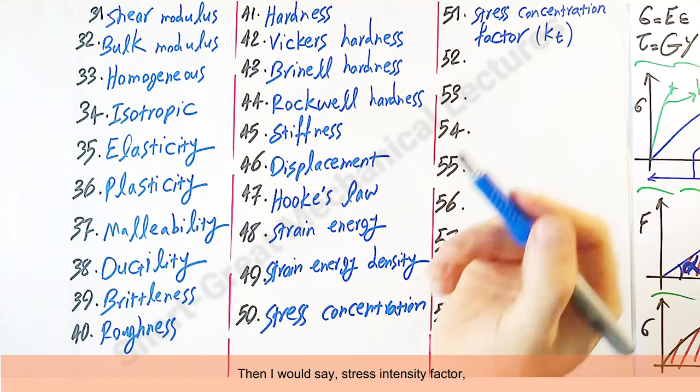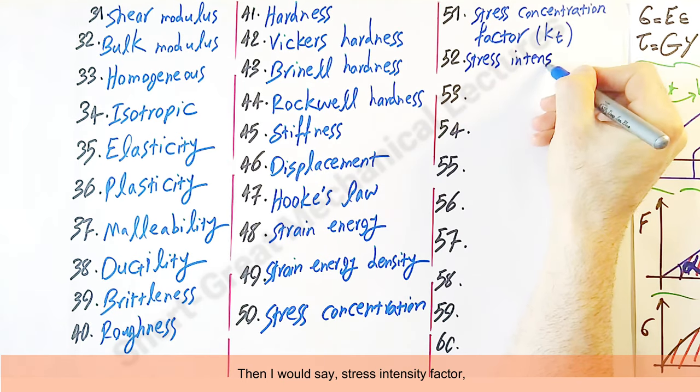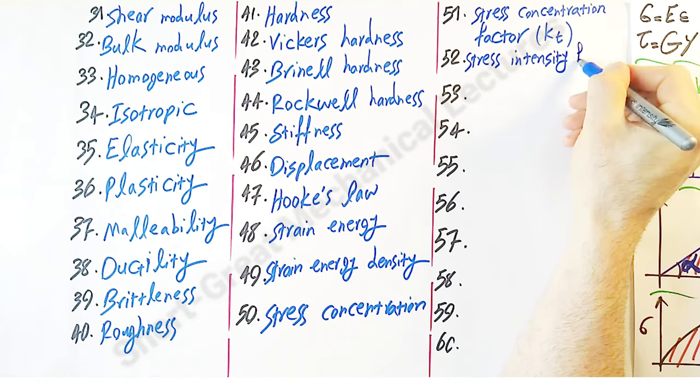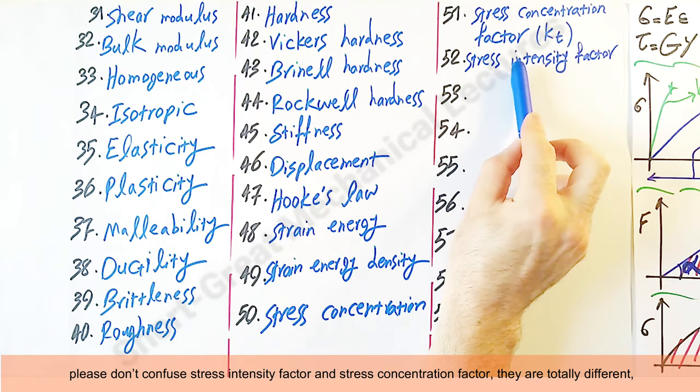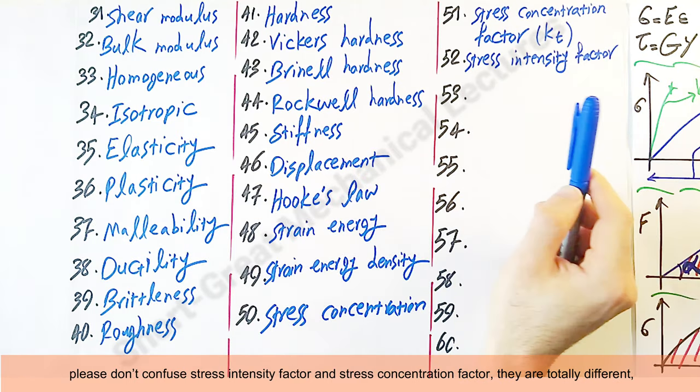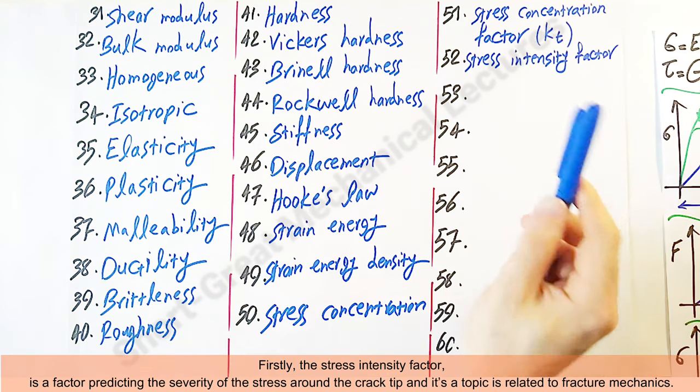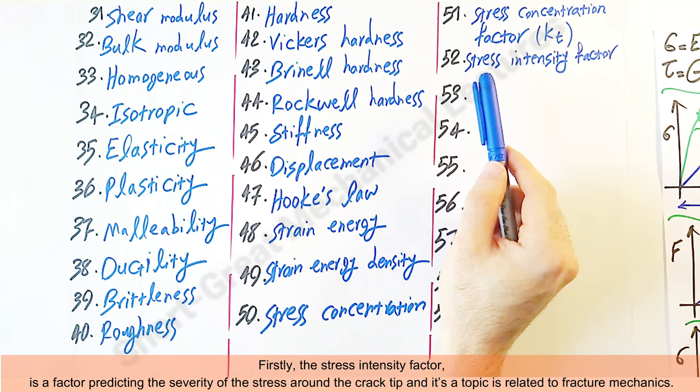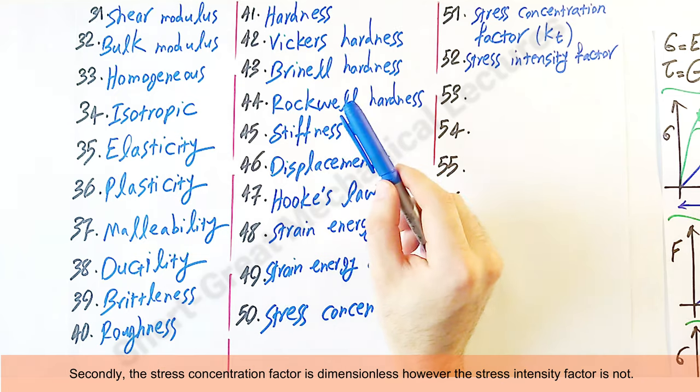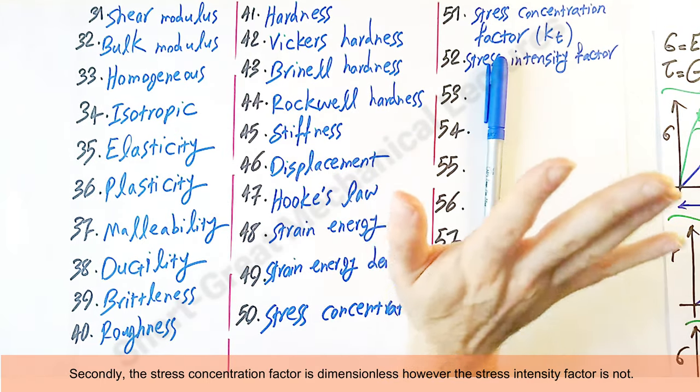Then I would say stress intensity factor. Please don't confuse stress intensity factor and stress concentration factor. They are totally different. Be careful. This is a very common mistake among mechanical engineers. Firstly, the stress intensity factor is a factor predicting the severity of the stress around the crack tip, and it's a topic related to the fracture mechanics. Secondly, the stress concentration factor is dimensionless. However, the stress intensity factor is not.